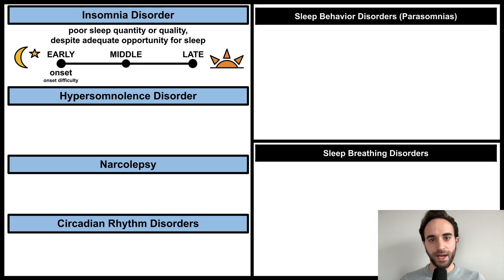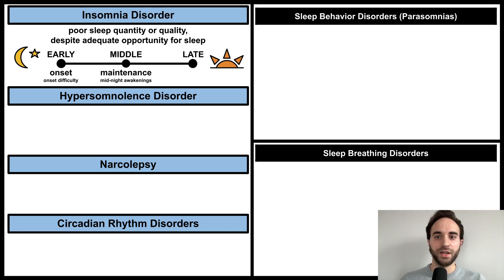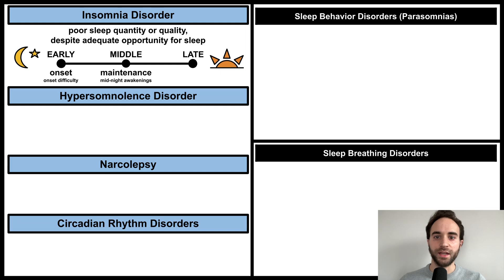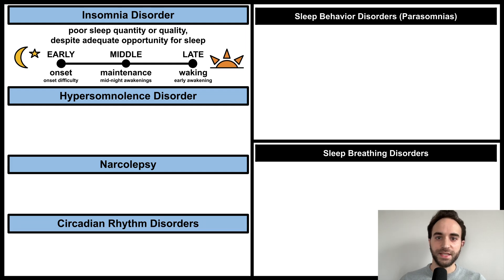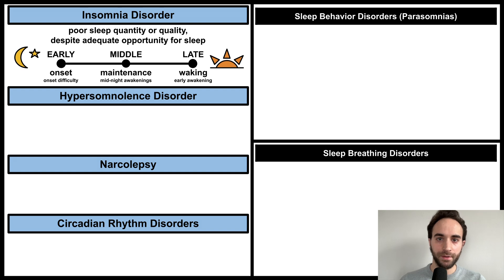Early insomnia involves problems with sleep onset, in other words, problems with falling asleep. Middle insomnia involves problems with sleep maintenance, in other words, waking up in the middle of the night. Late insomnia involves problems with waking from sleep, that is, waking up too early. For example, this might involve consistently waking up before your alarm.